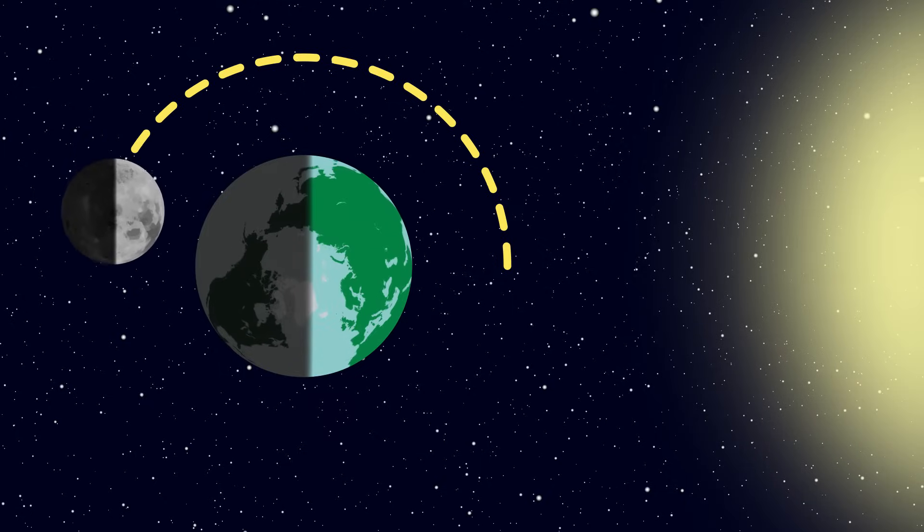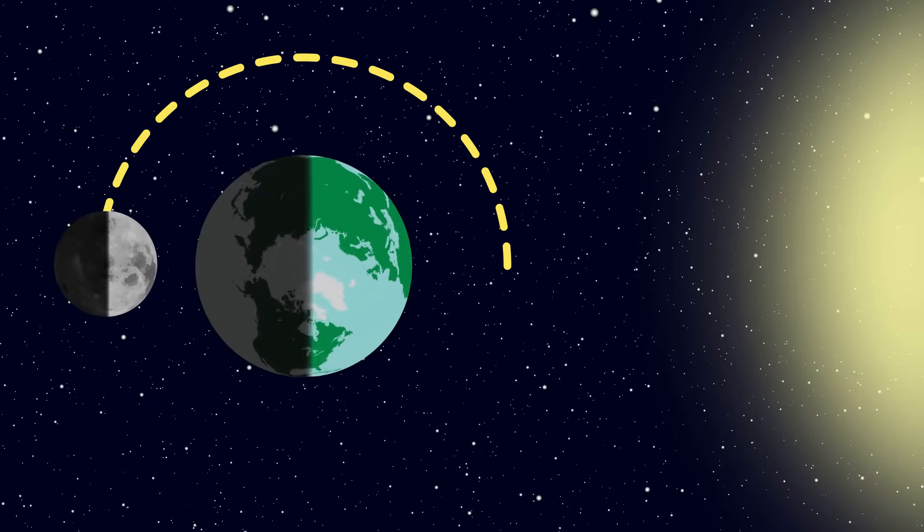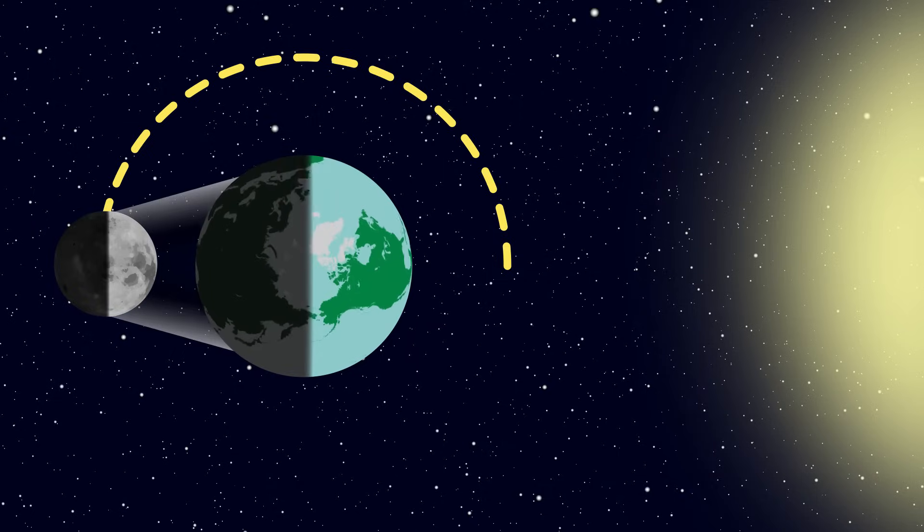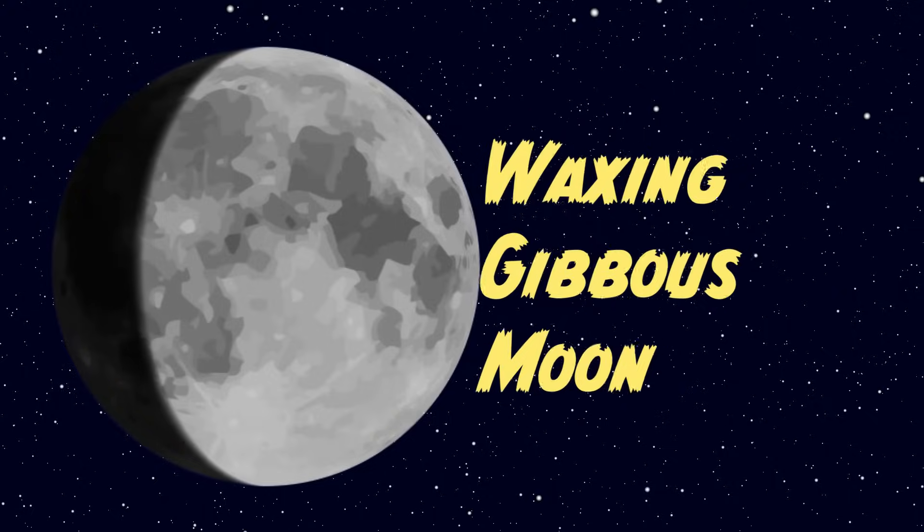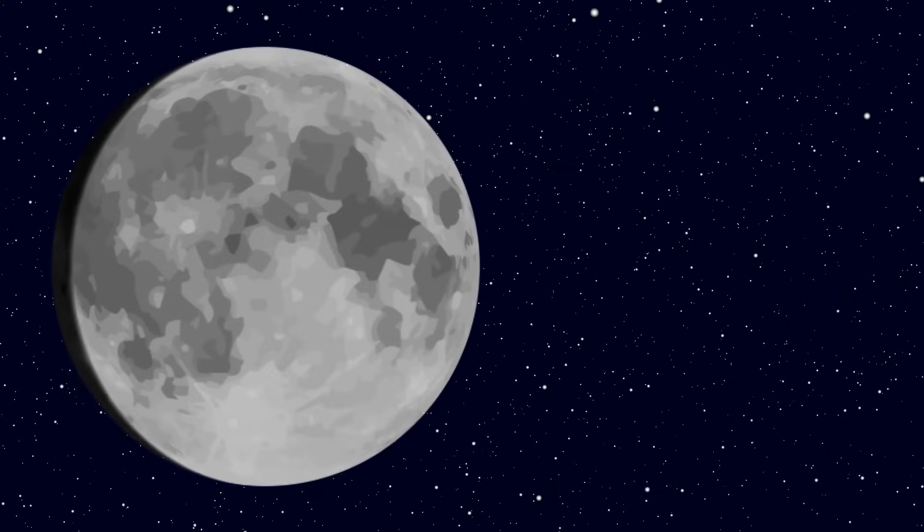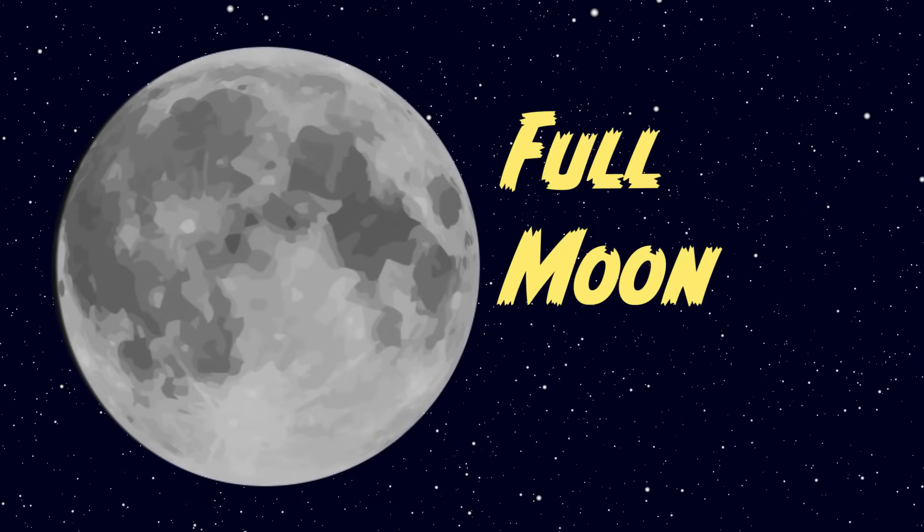When the moon has reached the halfway point of its orbit, it's now 180 degrees from the sun, and the Earth is effectively sandwiched between the sun and the moon in space. As we look back at the moon, we're looking at its fully illuminated face. This is, of course, called the full moon.